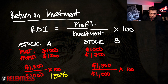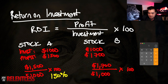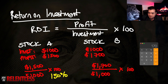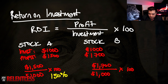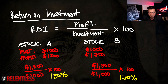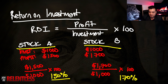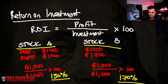Now let's look at stock B — you can probably figure it out already. It's $1,700 divided by $1,000, times by 100 — that's 170%. So the ROI for stock A is 150% and for stock B it's 170%. By looking at which stock is more profitable, you're going to pick stock B because it returns more.